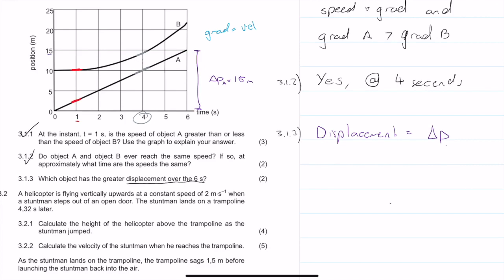While for B, it would be this change in position right here, which I would say is about 21 minus 10, which is 11 meters. So the displacement of A is greater than the displacement of B, so the answer is object A.